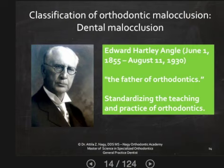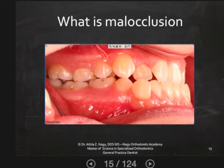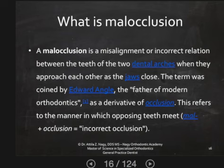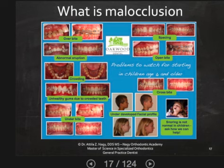First it will be important to cover: what is malocclusion? How do we define it? Well, malocclusion is really just a misalignment or incorrect relationship of the two arches when they come together. That's really how Edward defined this, and there are lots of different types of malocclusions that we will cover today.